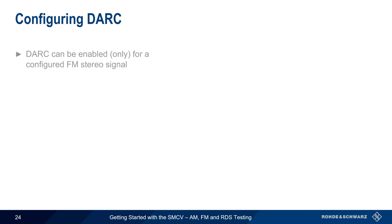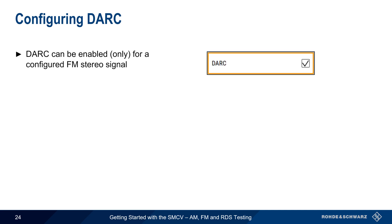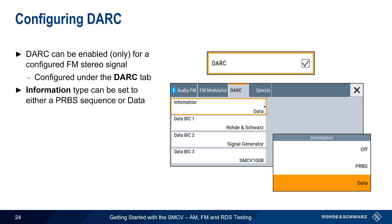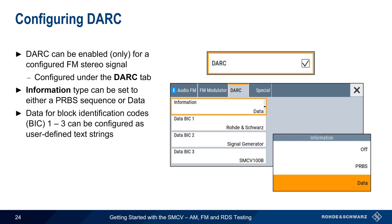Like RDS, a DARC subcarrier can only be enabled when generating a stereo FM broadcast signal. DARC is then configured under the DARC tab. The information contained within a DARC signal can be set to either a PRBS sequence or user-defined data. In the case of user-defined data, this is done in the form of three block identification codes, each containing a user-defined text string.